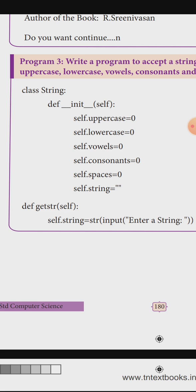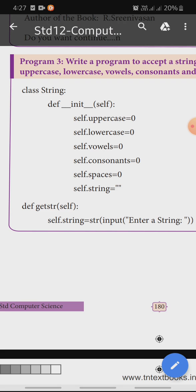First, initialize all values to zero. Self.uppercase is zero, self.lowercase is zero, self.vowels is zero, self.consonant is zero, self.space is zero, and self.string is empty.